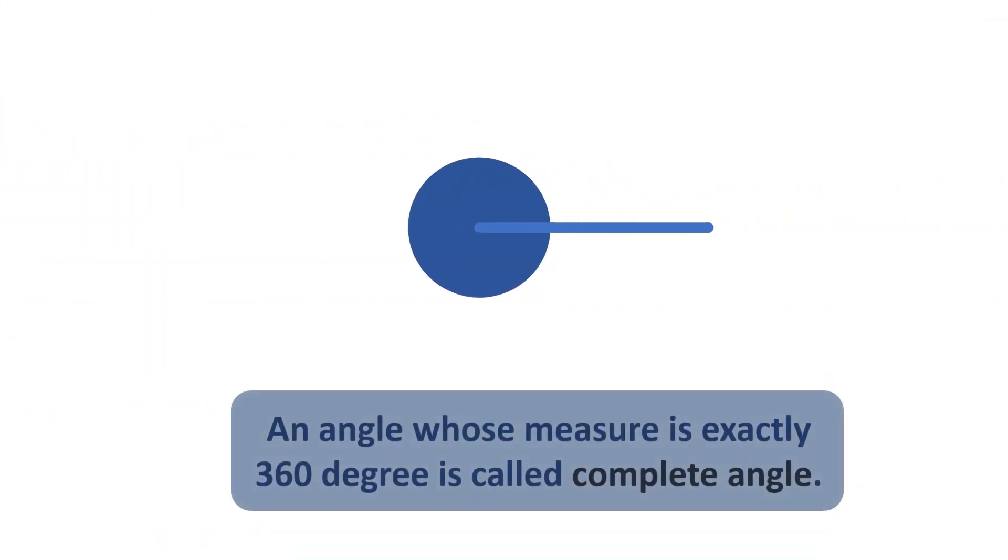An angle whose measure is exactly 360 degree is called Complete Angle.